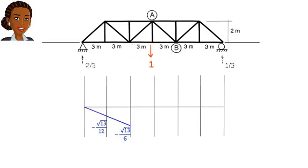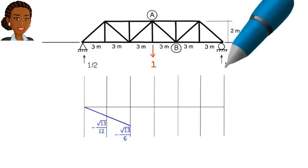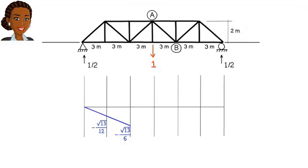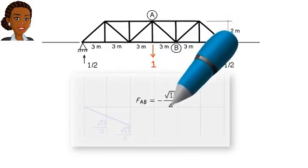We continue moving the unit load from joint to joint, calculating the resulting force in member AB at each step and plotting the value on our line graph until the diagram is complete, like this.